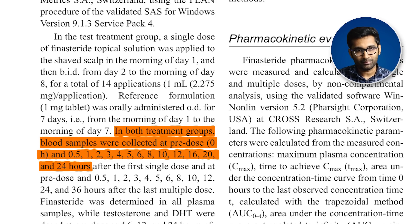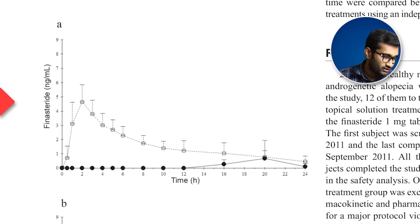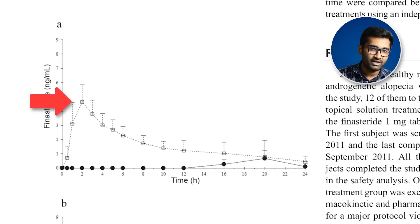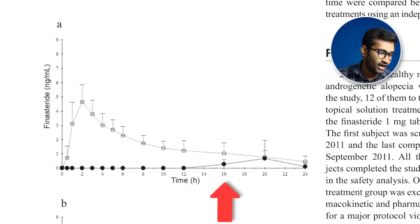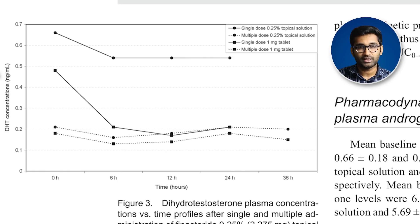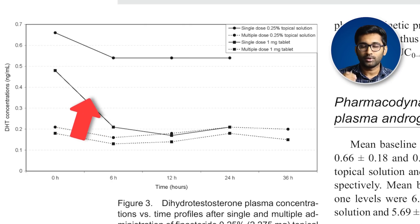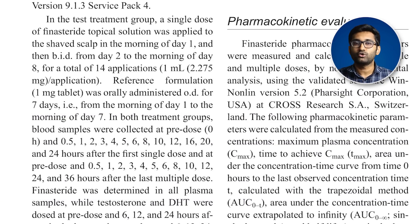Researchers are collecting blood samples from both formulations to compare drug concentrations. In the graph, there are two types of data: oral finasteride at different doses. This is the single-dose protocol, which shows the characteristics of the drug — specifically the blood level profiles over time. There are also multi-dose protocol comparisons.